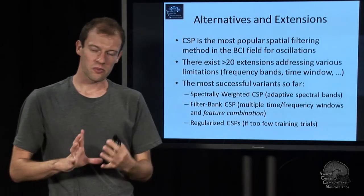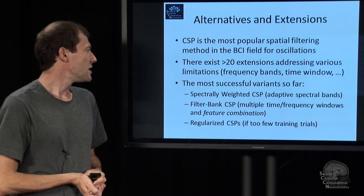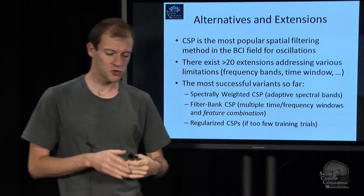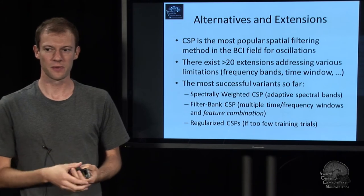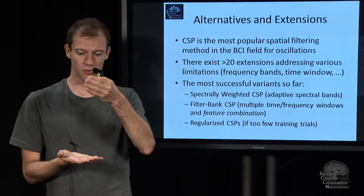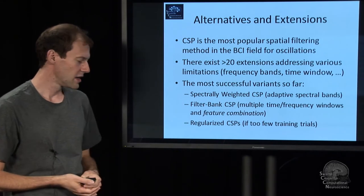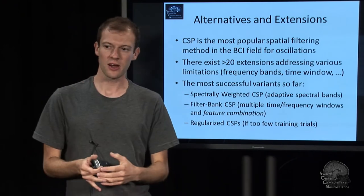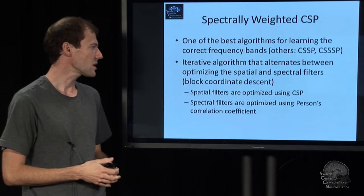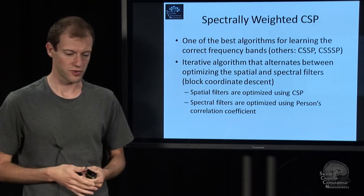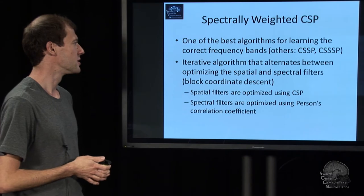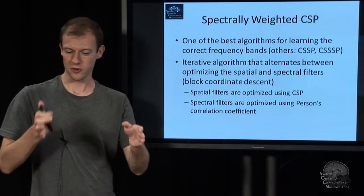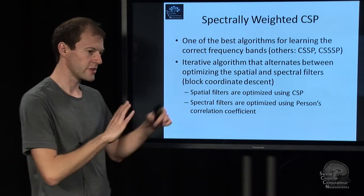Moving back from the classifier to the spatial filters — why CSP is very good — there are lots of extensions. Some extensions automatically learn the frequency bands that are relevant. Others can deal with multiple known frequency bands, such as filterbank CSP. Some are regularized in some way, giving better-behaved results if you have too little data or outliers. There are probably 50 or so versions of this method, many of which are implemented. Frequently it's about getting rid of heuristics — finding the right frequency window or time window — and solving that as part of the problem.